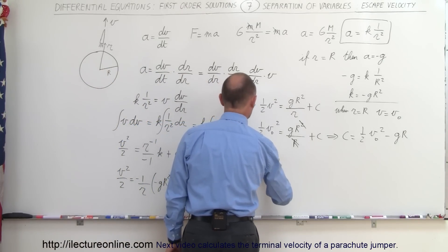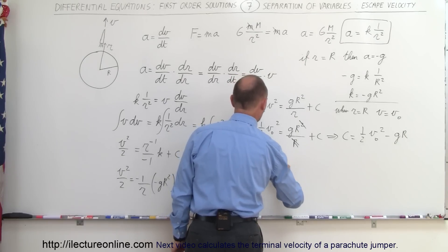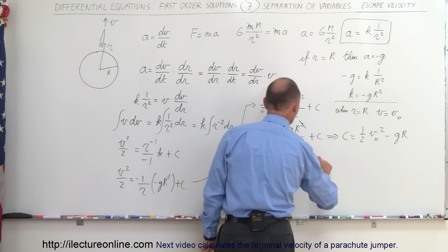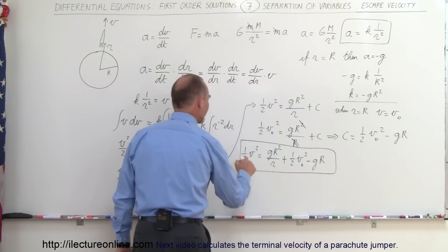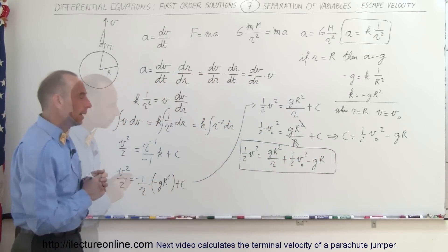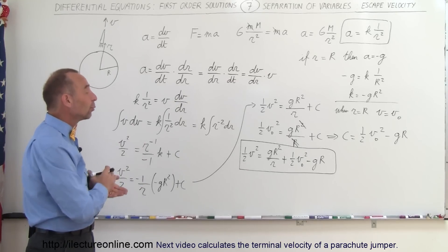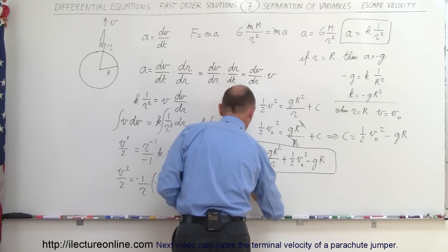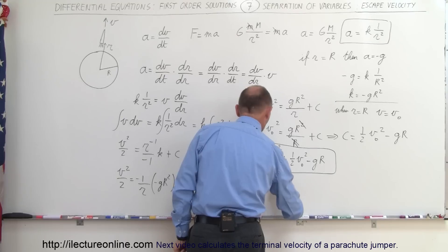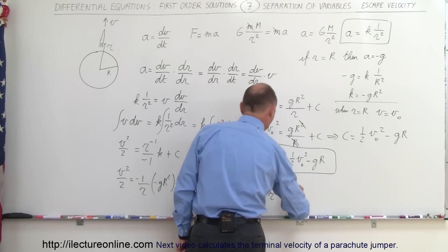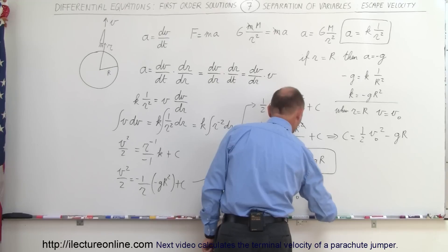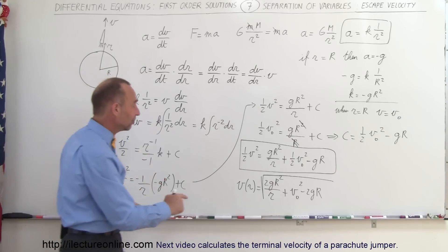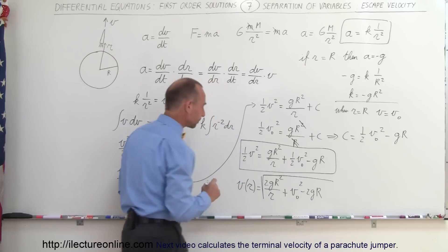Plugging the constant back in: one-half V squared equals g times R squared over r, plus one-half V-initial squared minus g times R. That's the relationship between velocity as a function of position. If you prefer V isolated on one side, multiply both sides by 2 and take the square root, giving: V as a function of R equals the square root of 2gR squared over r plus V-initial squared minus 2gR.